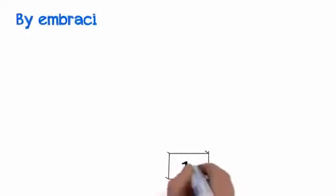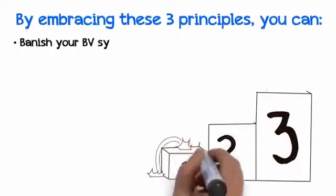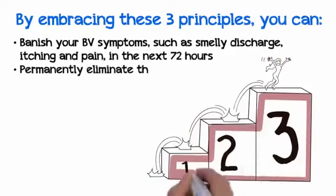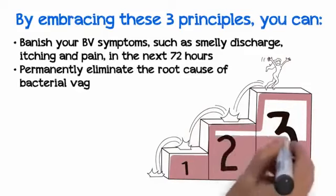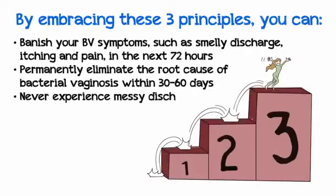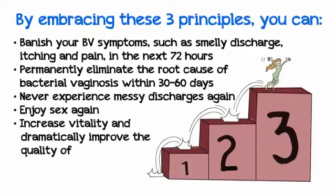By embracing these three principles, you can banish your BV symptoms such as smelly discharge, itching, and pain in the next 72 hours. Permanently eliminate the root cause of bacterial vaginosis within 30 to 60 days, never experience messy discharges again, enjoy sex again, and dramatically improve the quality of your life.